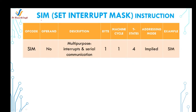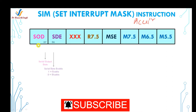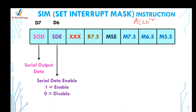Now let's see the SIM instruction. SIM stands for Set Interrupt Mask. This is a multi-purpose instruction. The first purpose is to set the mask over interrupts RST7.5, RST6.5, and RST5.5. The second purpose is for serial communication. The SIM instruction interprets the accumulator content in a specific form. The d7 and d6 bits are used for serial output communication — SOD (Serial Output Data) sends data to the interfaced external device, but communication is possible only when the serial data enable bit is 1.